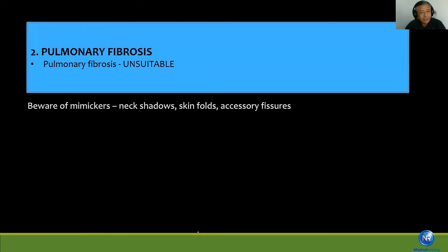An apical opacity will be considered unsuitable. But beware of mimics like neck shadows, skin folds, and accessory fissures. These can mimic apical fibrosis and we can be making a mistake in reporting the X-ray.